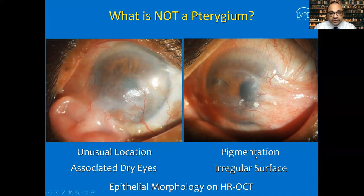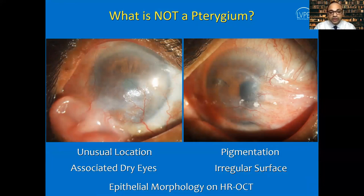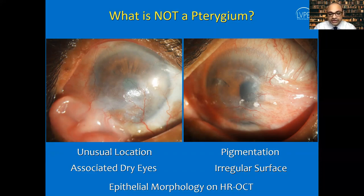It's very important to recognize what is NOT a pterygium. Warning signs include: unusual location (not nasal), keratin deposition on the surface, associated dry eyes, excessive or irregular pigmentation, irregular surface, prominent tortuous feeder vessels, and — if OCT is available — abnormal epithelial morphology on a line scan through the lesion. These features indicate an alternate diagnosis rather than a primary or recurrent pterygium.